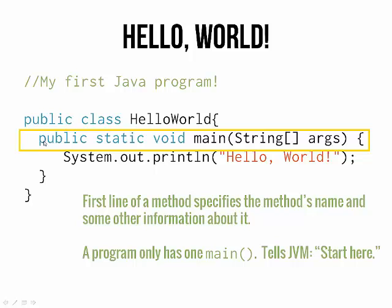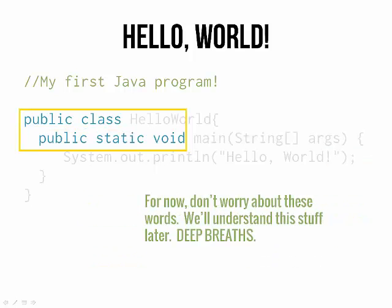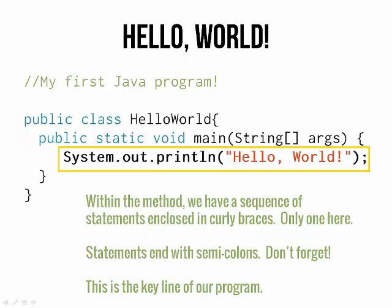The indented first line is the specification for a method — it tells us a bunch of stuff about the method: public static void. These are special keywords called reserved words. Don't worry about them right now; we're going to talk about them later. They tell us stuff about the method, then the name of the method, then what's going into the method. Main is a really special method — it's the method that tells the program 'start here.' Your program is only going to have one main. For now, just include those keywords — public class, public static void — in your program and trust me. We're going to get to them later.